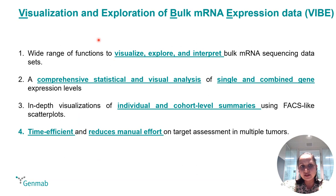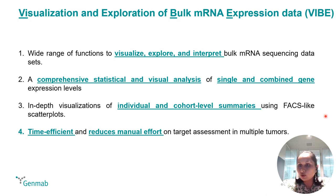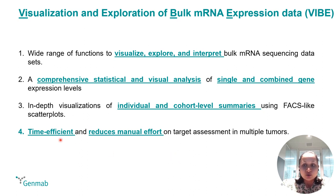Therefore, we have VIBE, which allows visualization, exploration, and interpretation of bulk mRNA sequencing data — just like Firebrowse or standard visualization tools — along with comprehensive statistical and visual analysis of not only single but combined gene expression levels. In-depth visualization of individual and cohort-level summaries, for example concordant or discordant expression of two genes or pathways, are provided using faceted scatter plots that can help prioritizing tumor types for bi-specific antibodies or pathway-guided monoclonal antibodies. Finally, it allows researchers to optimize the selection process of tumor types by saving time and resources and potentially accelerating the development of novel therapies.